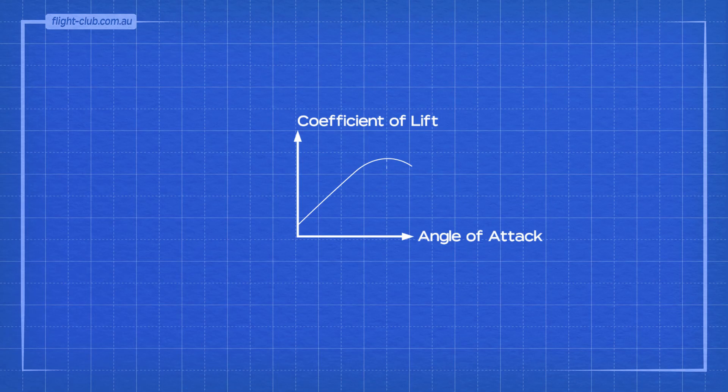For example, at 16 degrees angle of attack, the lifting ability of this wing is at maximum, just before it stalls. This is how the coefficient of lift is determined. It's part of the design and testing process, and it's specific to every wing design.